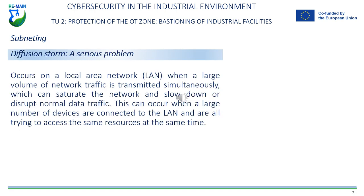A broadcast storm occurs on a local area network when a large volume of network traffic is transmitted simultaneously, which can overwhelm the network and slow down or disrupt normal data traffic. This can occur when there are a large number of devices connected to the LAN and they all try to access the same resources at the same time. To prevent such situations, local area networks are often equipped with traffic control systems that limit the bandwidth available to each device or regulate access to network resources.